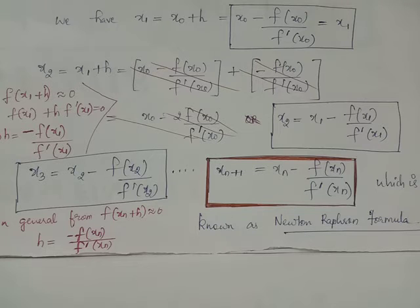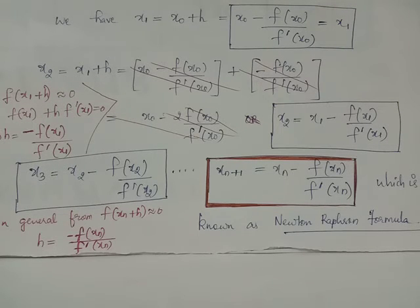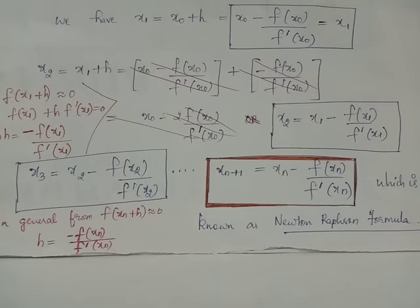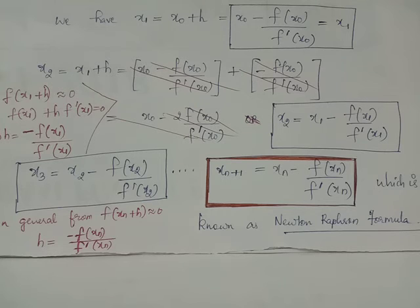We have x2 = x1 + h. When we expand f(x1 + h) using the Taylor series expansion and equate it to 0 approximately — since x1 + h is also a better approximation to the exact root alpha, f(x1 + h) is approximately equal to 0. Neglecting higher powers of h, we get f(x1) + h·f'(x1) = 0, giving h = -f(x1) / f'(x1). Hence x2 = x1 - f(x1) / f'(x1).